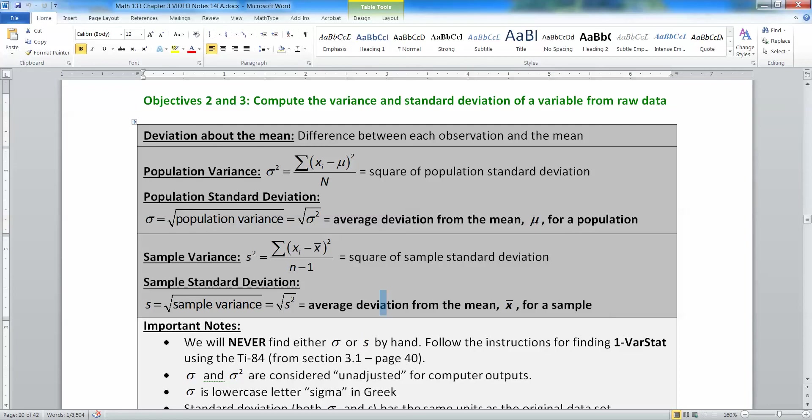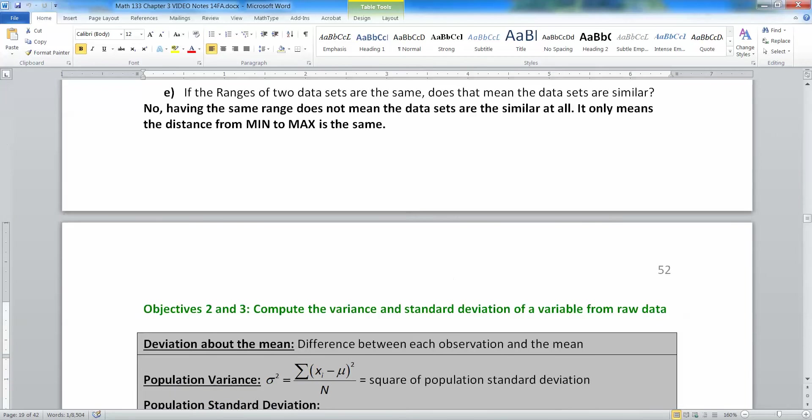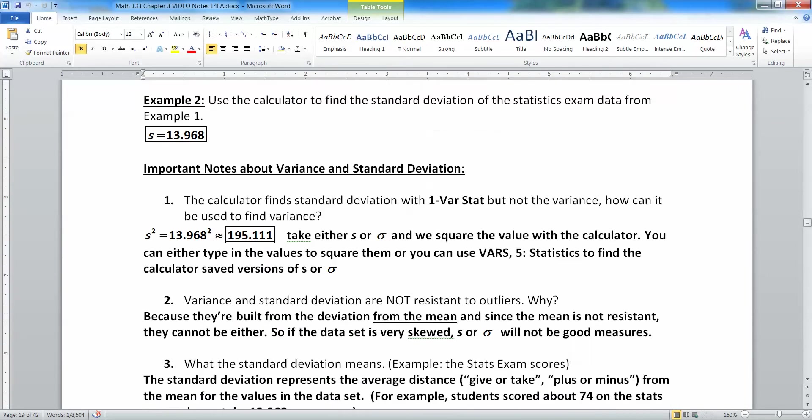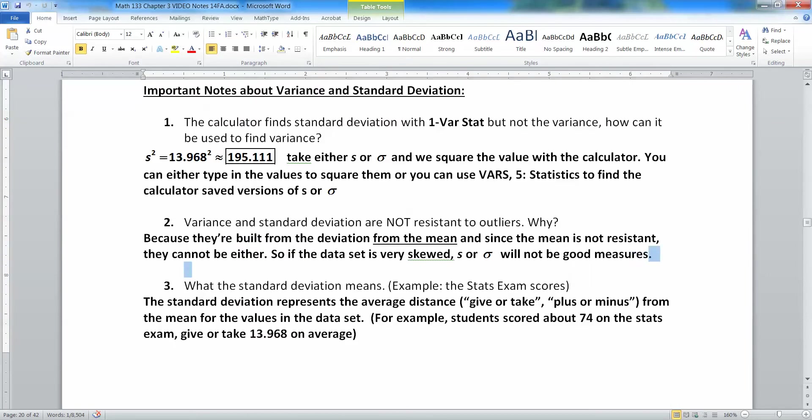So the problem with all of these is that they're not resistant to outliers. So when you have data points that are far away from the rest, it's going to cause all sorts of problems for all three of these measures of spread. The range, especially, will be completely out of whack because of whatever the largest and smallest values are.